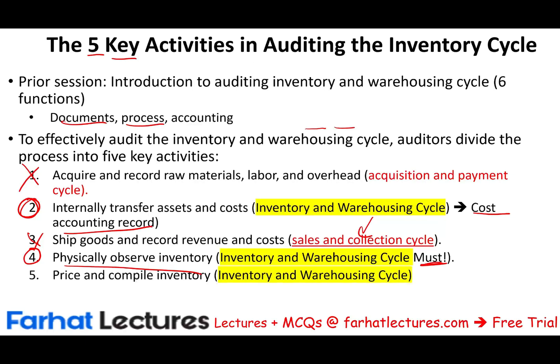The fifth activity is to price and compile inventory. Here we look at pricing: how do we determine the dollar amount and value of the inventory? We look at actual prices — did they change or stay the same? Did we multiply price times units correctly? Are we valuing inventory properly, whether we are using FIFO, LIFO, or weighted average? This is part of the inventory and warehousing cycle, and we will have a separate recording covering this key activity as well.